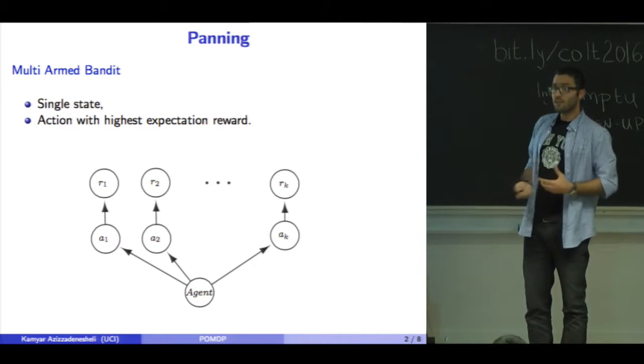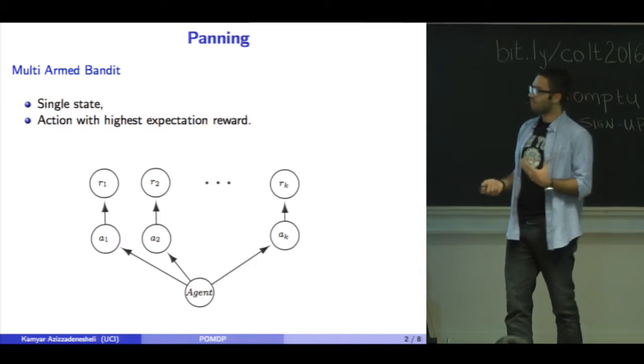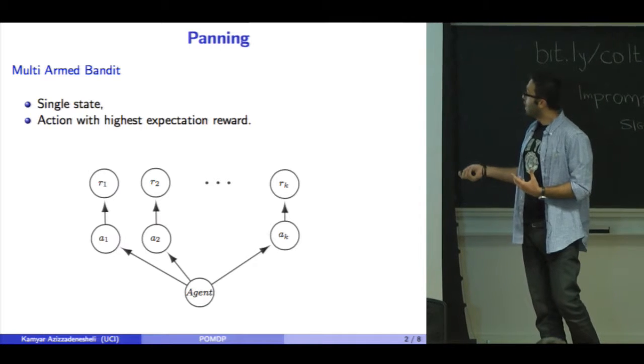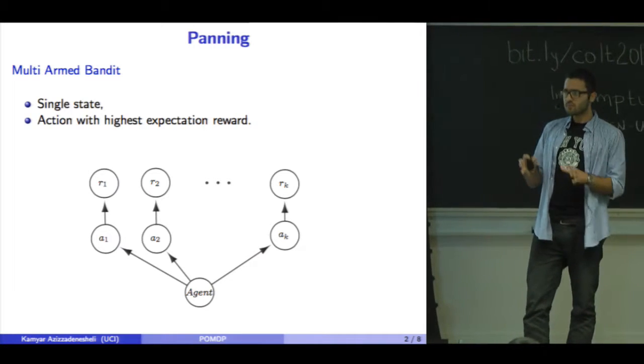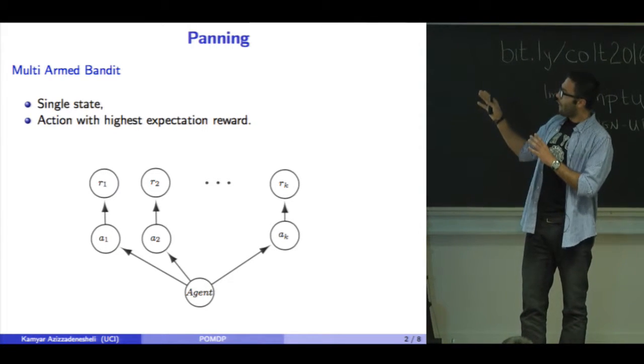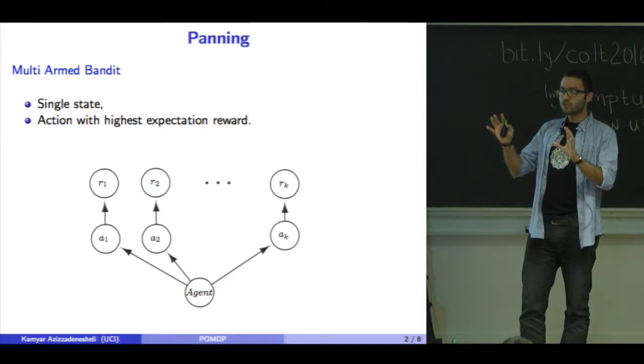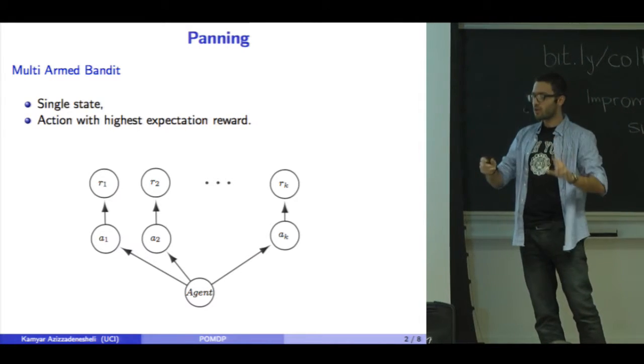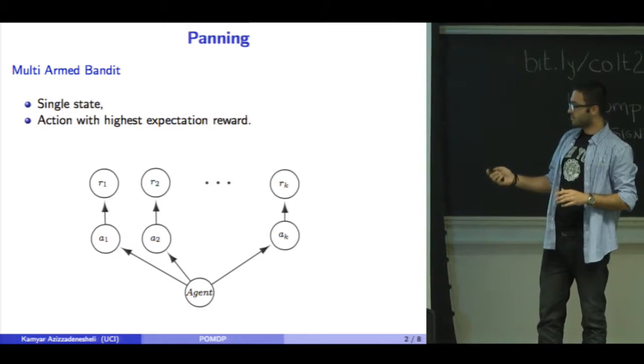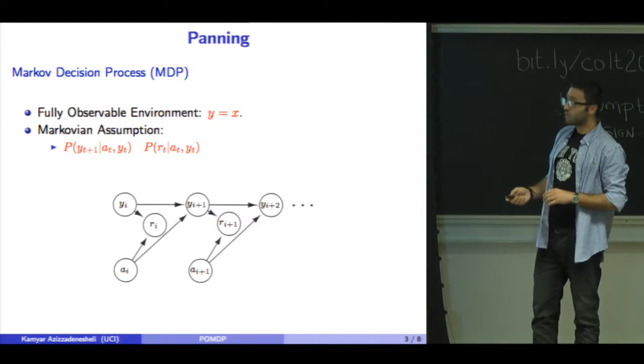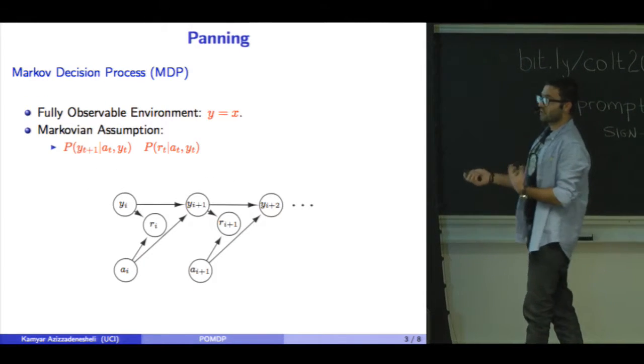The reinforcement learning problem for bandits is well-studied—you just find the arm with highest expected reward and choose it, which is simple. For Markov decision processes, planning is also well-studied.